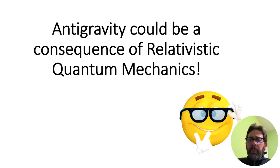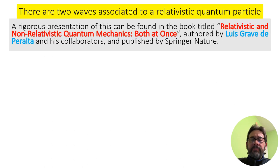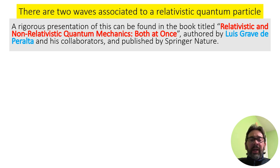Antigravity could be a consequence of relativistic quantum mechanics. There are two waves associated to a relativistic quantum particle. A rigorous presentation of this can be found in the book titled Relativistic and Non-Relativistic Quantum Mechanics, Both at Once, authored by Luis Graves de Peralta and his collaborators, and published by Springer Nature.